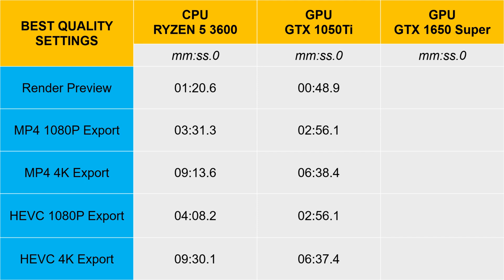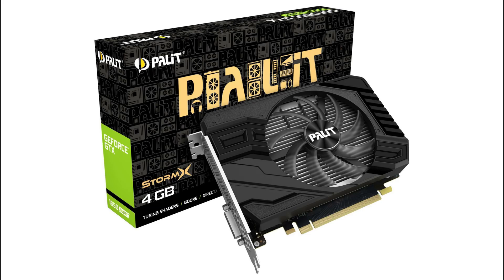Let's have a look at some of the results. Starting with the render preview, with CPU only it's 1 minute 20 seconds, and we get it down to 48.9 seconds with GPU acceleration. With the MP4 4K export we've got 9 minutes 13, and there's quite a good saving of time down to 6 minutes 38 seconds with GPU acceleration. The high efficiency codec is pretty much the same again.